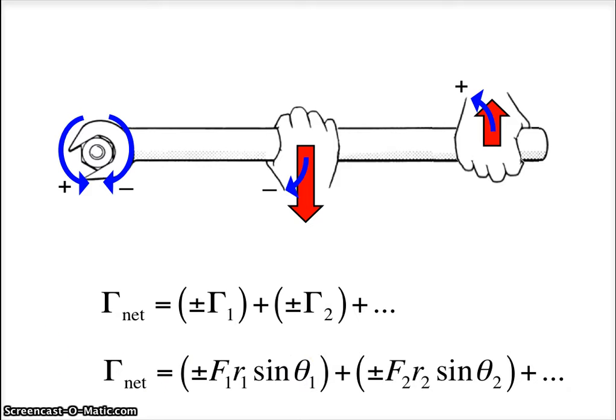Now if the net torque is zero, then that means the object is either not rotating at all, or it's rotating at a constant angular speed. And the clockwise torques balance the anticlockwise torques.